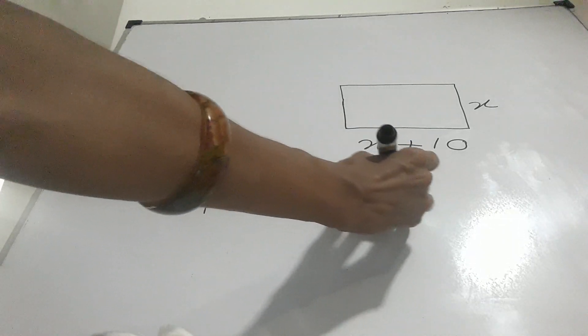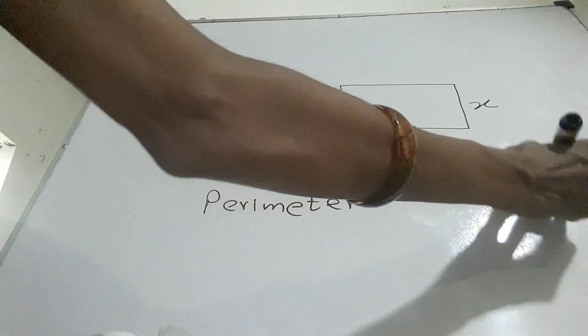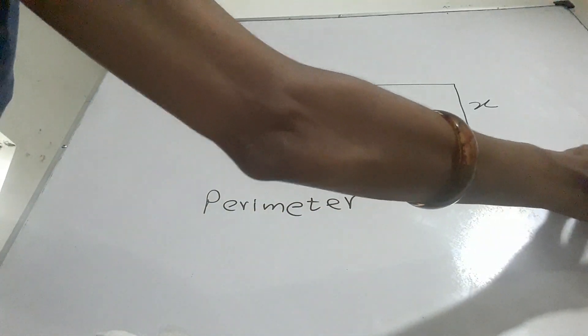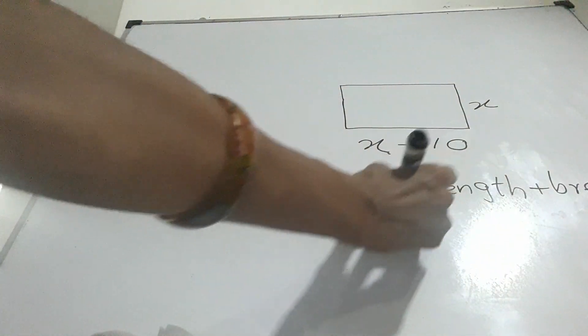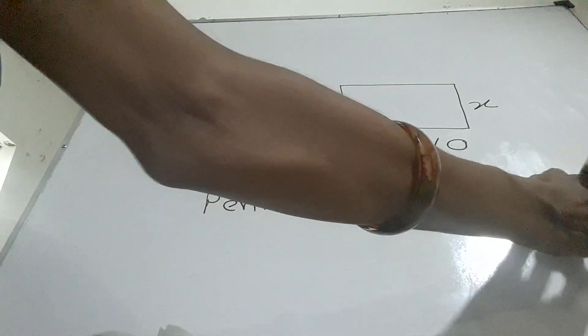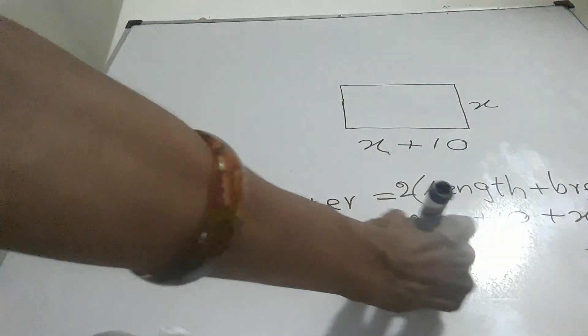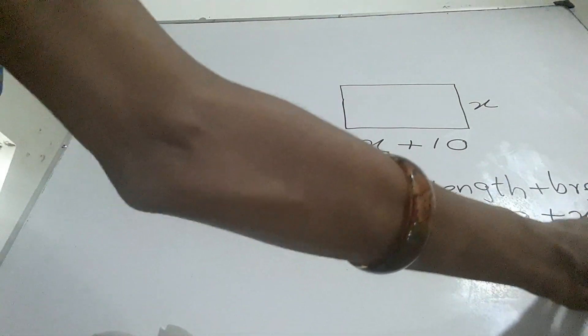Perimeter is equal to length plus breadth. This multiplied by 2. Length is X plus 10, breadth is X. This multiplied by 2. X plus X, 2X plus 10.